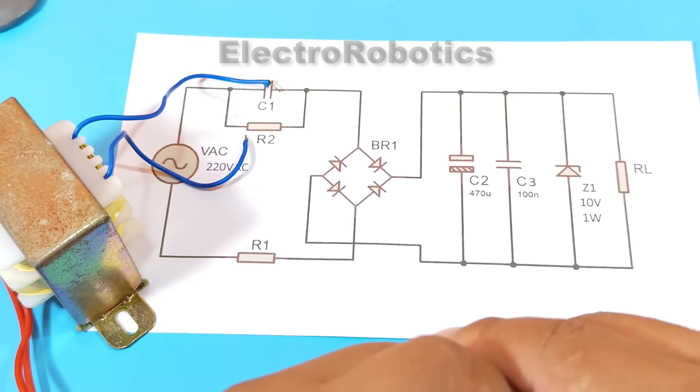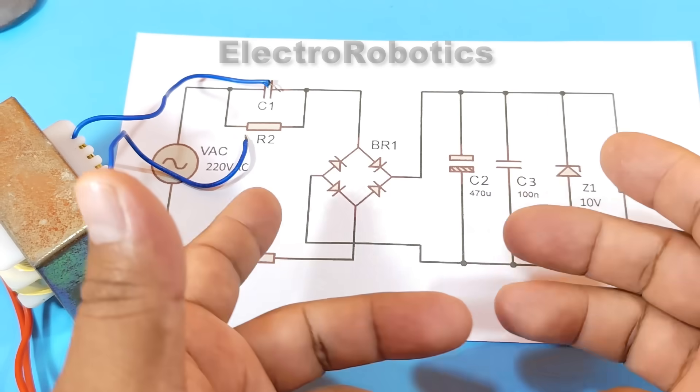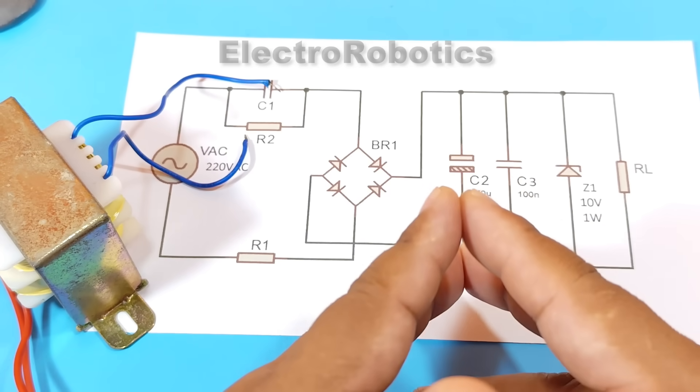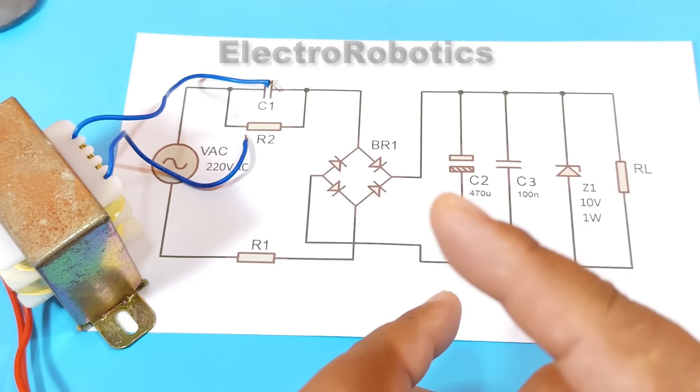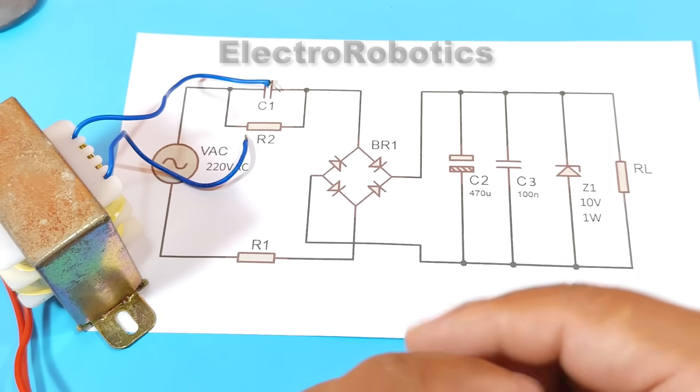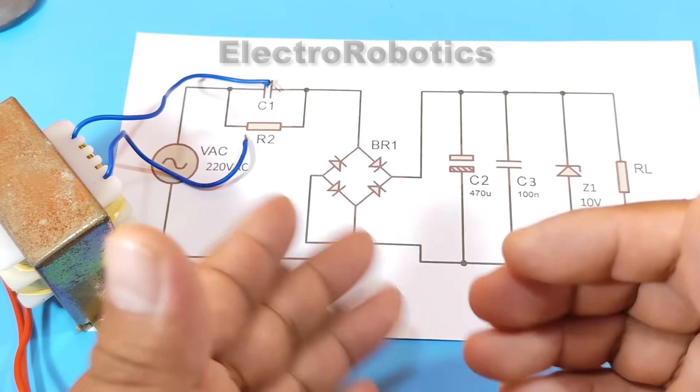And this would be its circuit. And this time, we are going to learn how to design and assemble a capacitive power supply so you can do it at home. And that way, you can power your electronic boards or electronic devices.